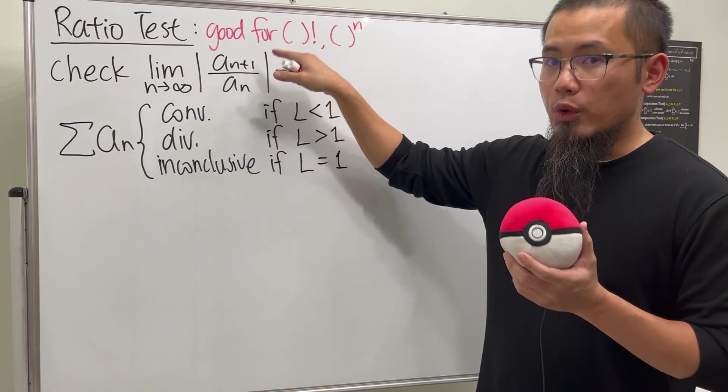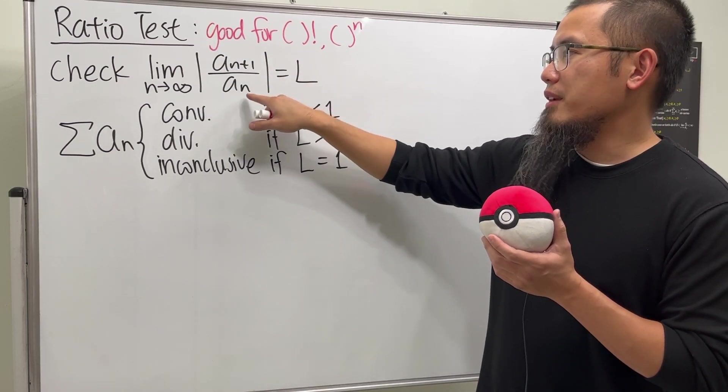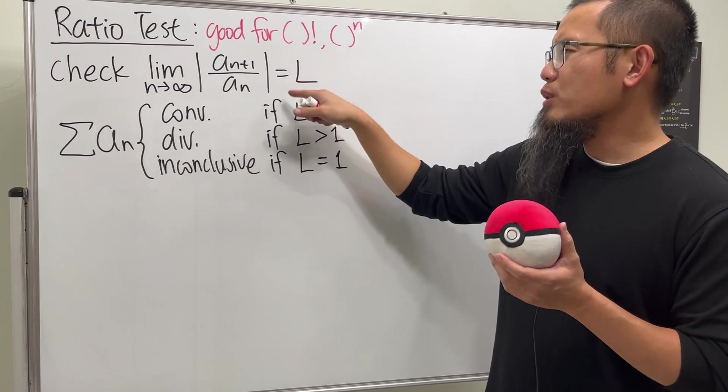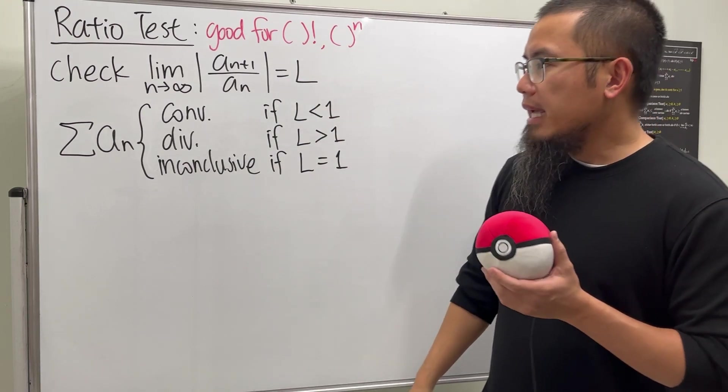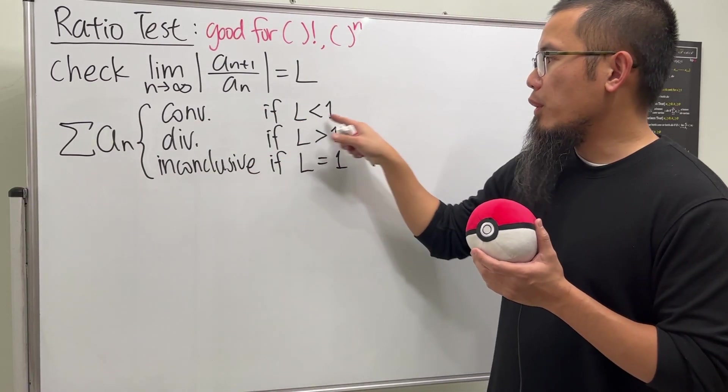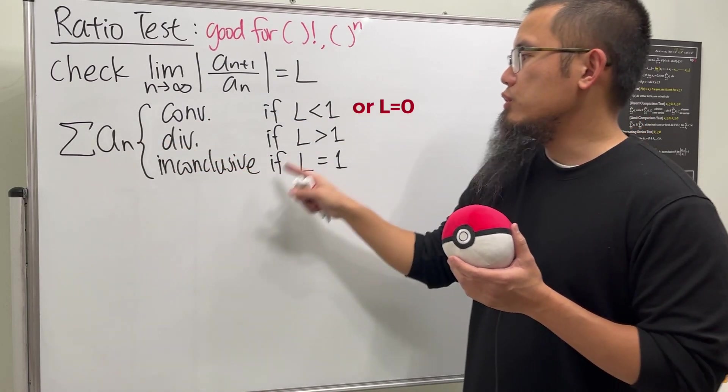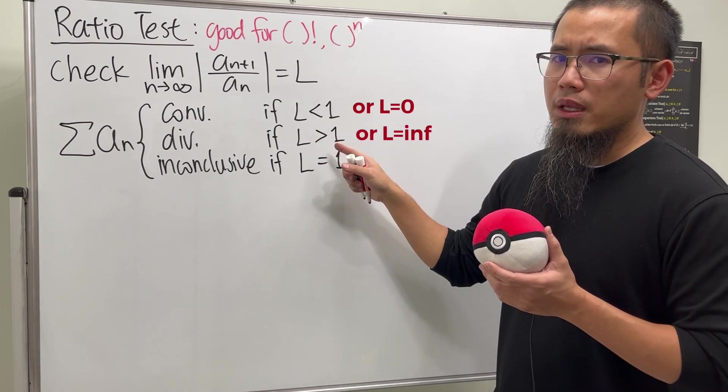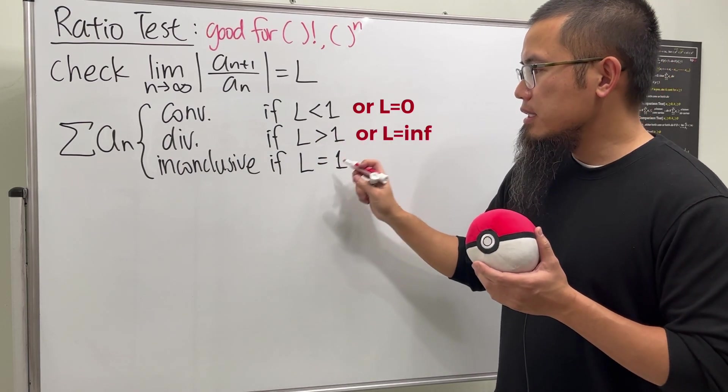We take the absolute value of the ratio of the next term and the current term, and suppose that we get an answer out of that that's called L. We know that the series of a_n will converge if L is less than one and it will diverge if L is greater than one. But when L is equal to one, this right here is inconclusive.